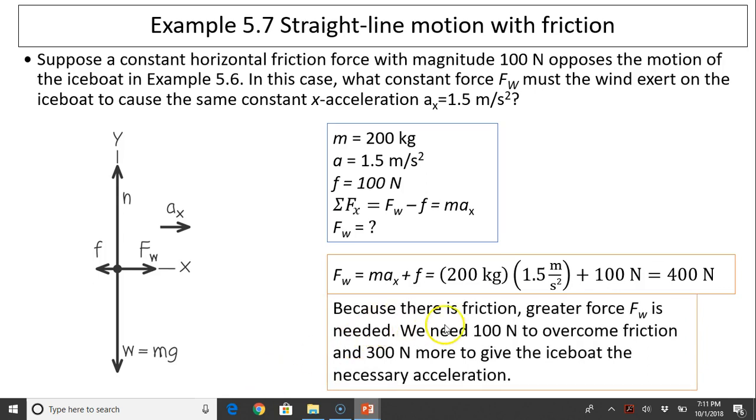Does this make sense? Well, because there is friction, a greater force of the wind is needed. We need 100 newtons just to overcome friction, then we need another 300 more to give the ice boat the necessary acceleration of 1.5 meters per second squared. That's why we have 400 newtons. That does make sense.